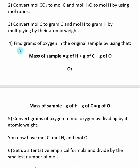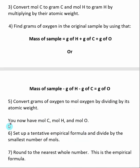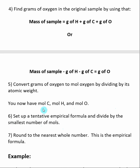Once we have those grams, we find the grams of oxygen by realizing that the mass of the sample must equal the grams of hydrogen plus the grams of carbon plus the grams of oxygen. The original mass of the sample was given in the question, and we have just determined the grams of hydrogen and carbon, so if we subtract those two values, what we're left with is grams of oxygen. We then convert those grams of oxygen to moles by dividing by the atomic weight of oxygen, and then we have the moles of carbon, hydrogen, and oxygen in our unknown sample.